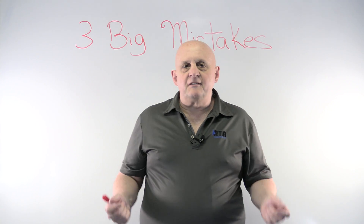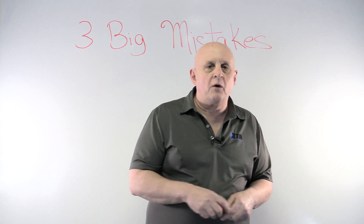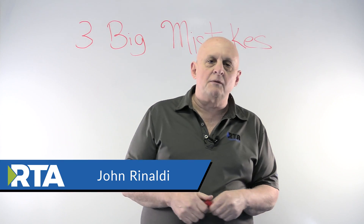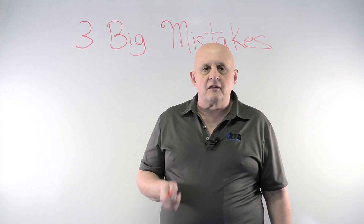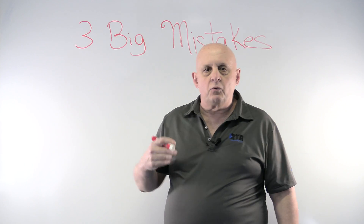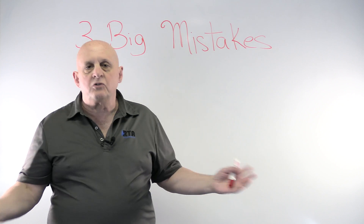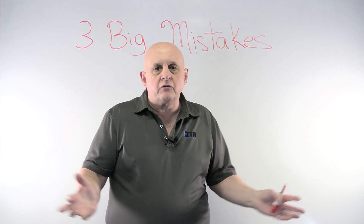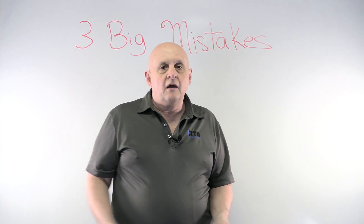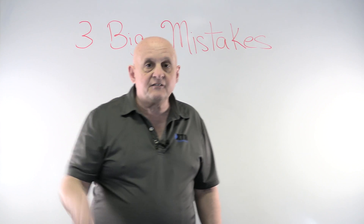When control engineers are building Ethernet IP networks they make three big mistakes, and today I want to talk about what those three big mistakes are. I'm John Rinaldi, I work for Real-Time Automation in Milwaukee, Wisconsin. Most people think all they have to do is get a bunch of devices that have been conformed by the ODBA and then hook them all together and away they go — that doesn't work.